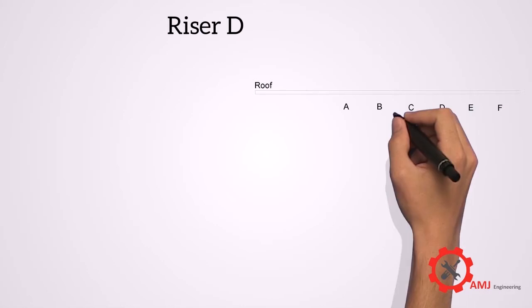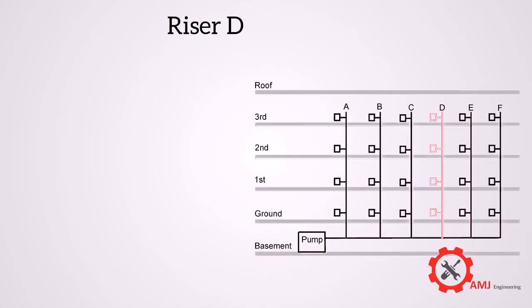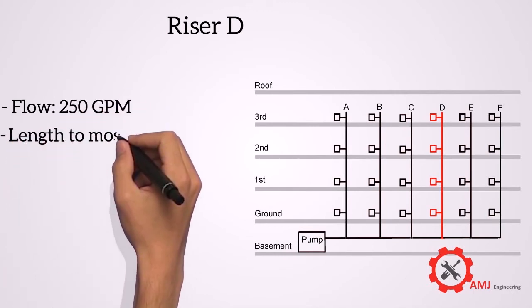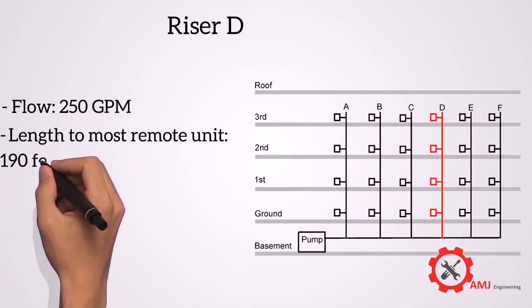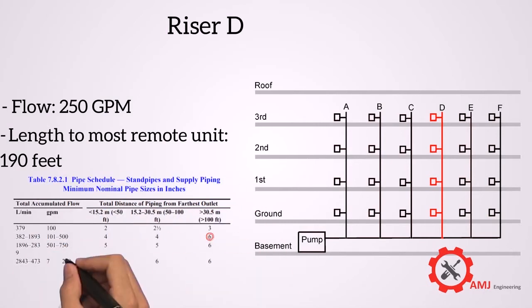For riser D, the flow is 250 GPM, the length to most remote outlet on riser D is 190 feet. So from the table the required pipe size is 6 inches.